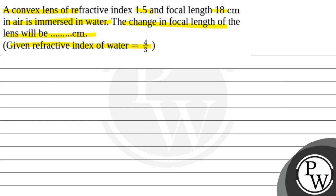Now we are talking about a convex lens. Refractive index, mu_g, is equal to 1.5. Focal length is equal to 18 cm. This is first in air and later in water, where the refractive index is 4/3. What will be the change in focal length?